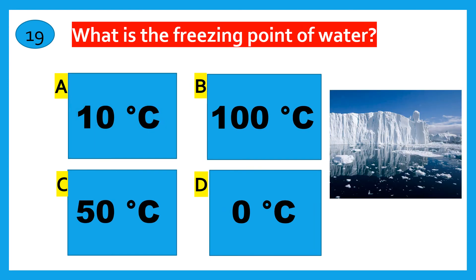What is the freezing point of water? 10 degrees Celsius, 100 degrees Celsius, 50 degrees Celsius, 0 degrees Celsius. The correct answer is 0 degrees Celsius.